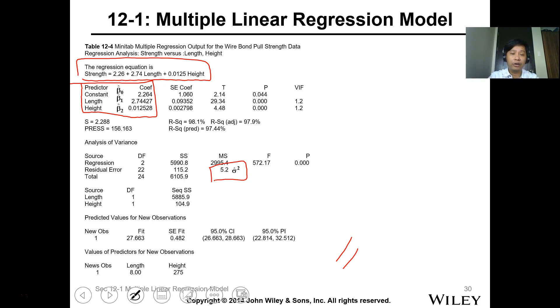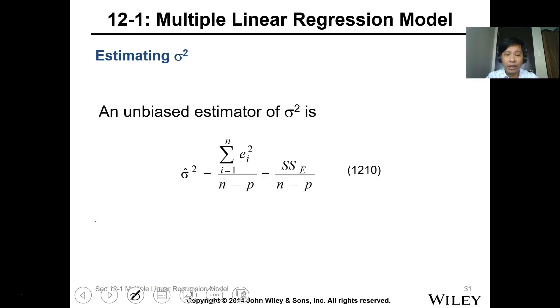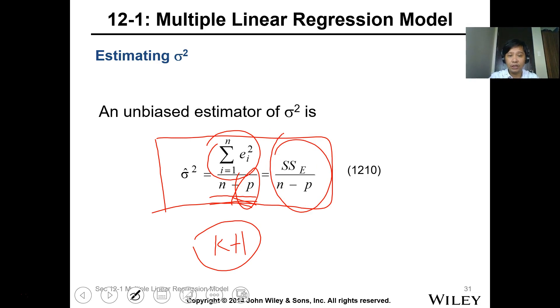Similar to Excel, we have the analysis of variance table, the ANOVA. They can use the prediction model. Now for the unbiased estimator, this is just your variance. The variance is equal to the summation of the squared residuals divided by n minus p, where p equals k plus 1.